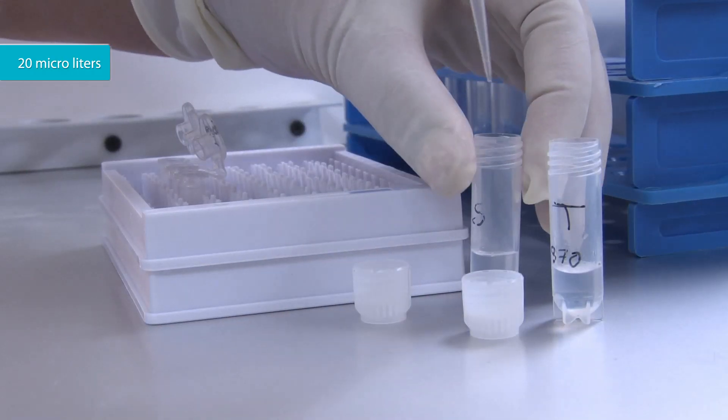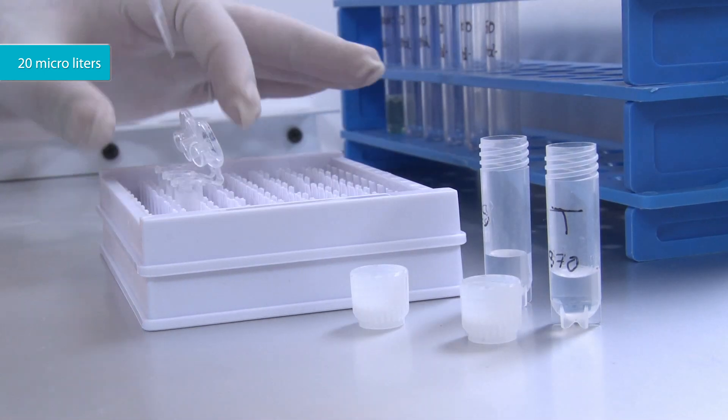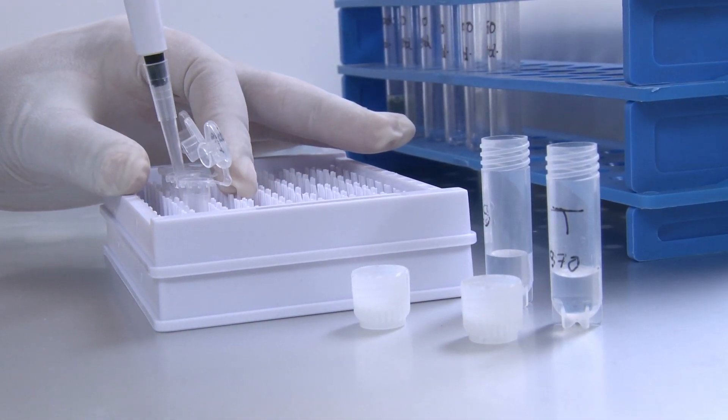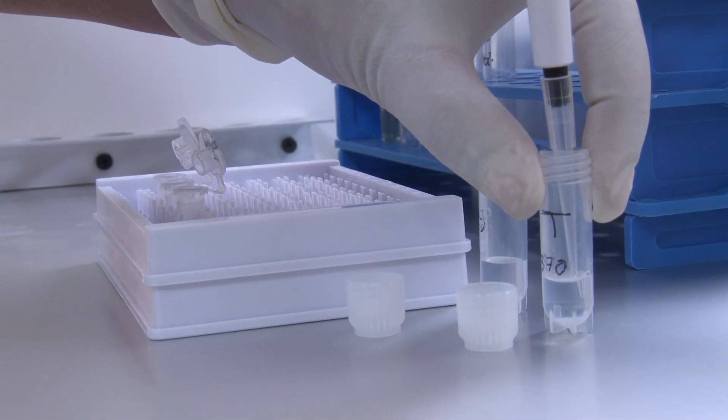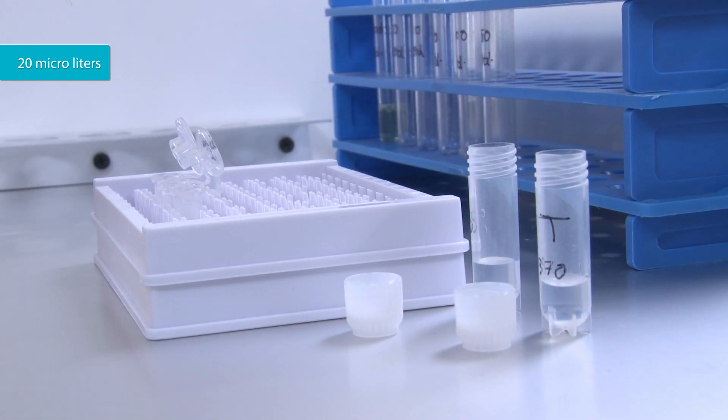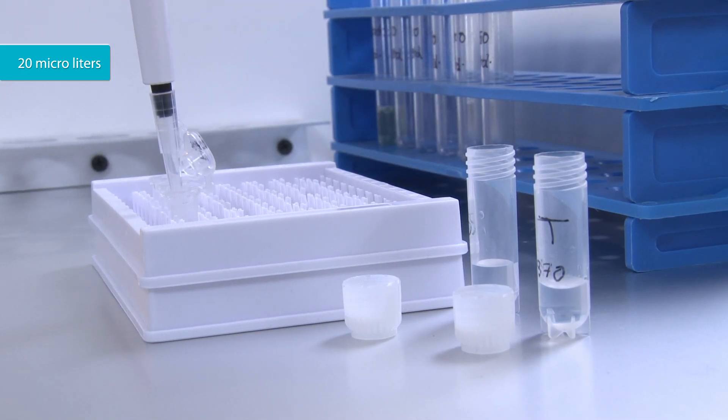Add 20 microliters of Supernatant from the Centrifuged Standard Tube to the tube labeled as Standard. Add 20 microliters of Supernatant from the Centrifuged tube labeled as Test to the tube labeled as Test.